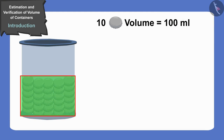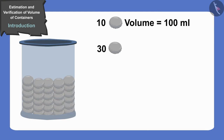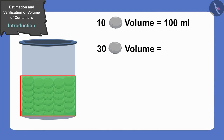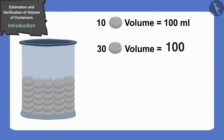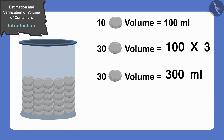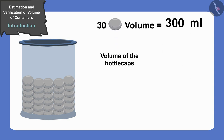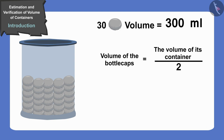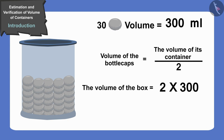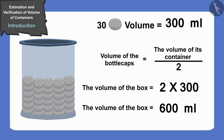The volume of 10 bottle caps is 100 ml, and Babban has collected 30 bottle caps. This means the volume of the bottle caps collected by Babban is 100 times 3, that is 300 ml. But the volume of the bottle caps collected by Babban is half the volume of its container. Therefore, the volume of the box of Babban will be 2 times of 300, or 600 ml.